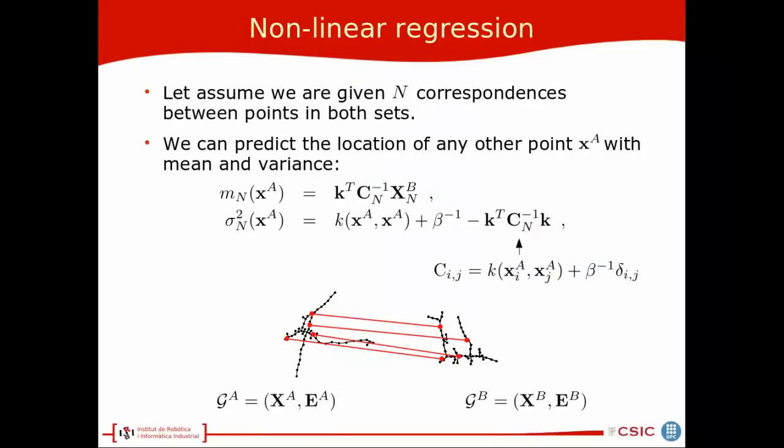Using a Gaussian Process, we can define a nonlinear regression like that. Let's assume we are given correspondences within points in both sets. We can predict the location of any other point with a mean and variance given by the standard equations of the Gaussian Process.